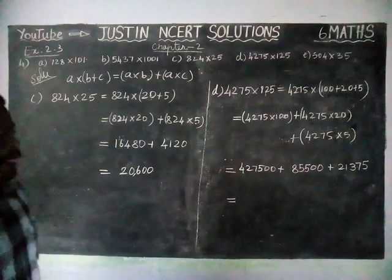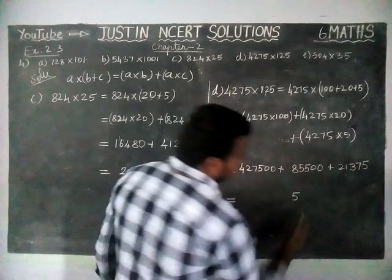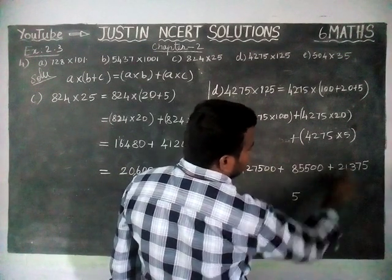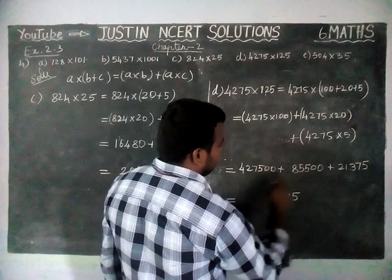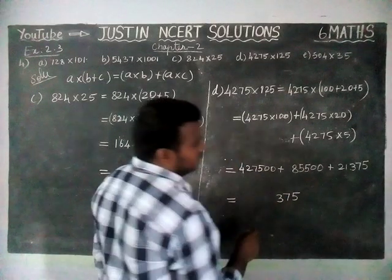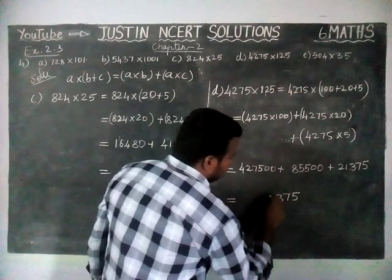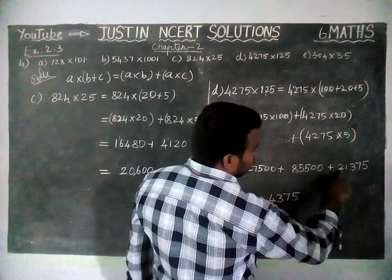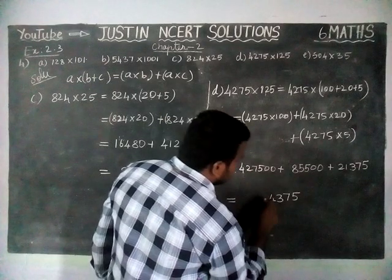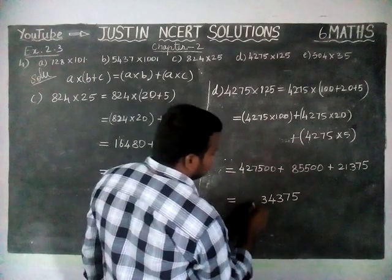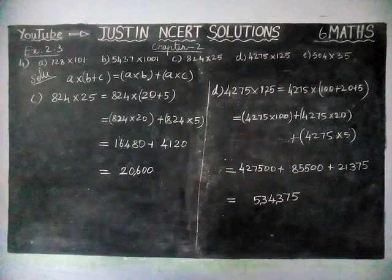Now we are going to find the answer. Ones place: 5 plus 0 plus 0 is equal to 5. Tens place: 7 plus 0 plus 0 is equal to 7. Next place: 3 plus 5 is equal to 8, 8 plus 5 is equal to 13 remaining 1. 1 plus 1 is equal to 2, 2 plus 5 is equal to 7, 7 plus 7 is equal to 14 remaining 1. 2 plus 1 is 3, 3 plus 8 is 11, 11 plus 2 is 13 remaining 1. 5 plus 1 is equal to 4, 4 plus 1 is equal to 5. So the answer is 5,34,375.